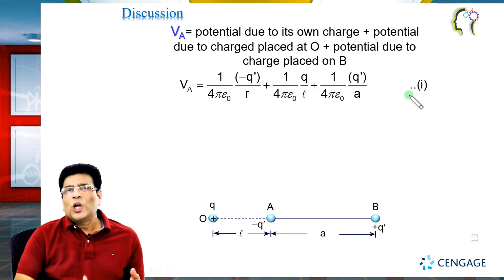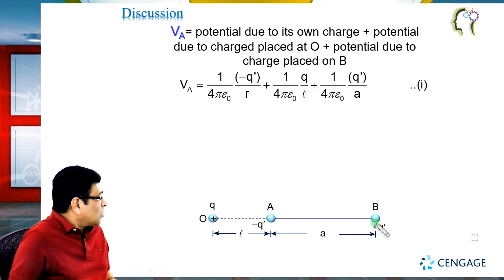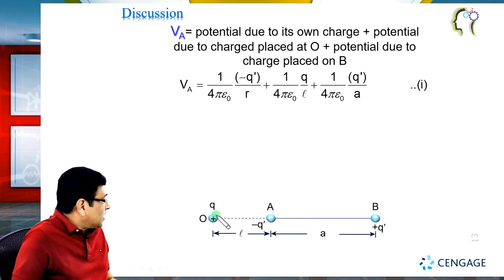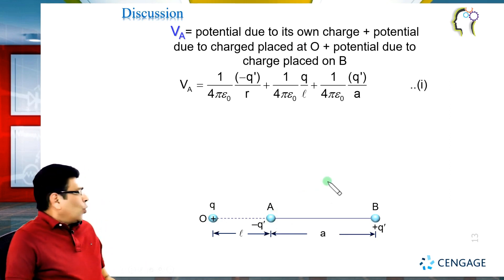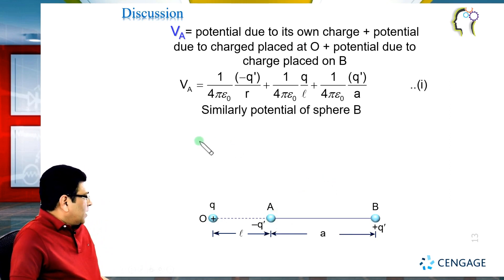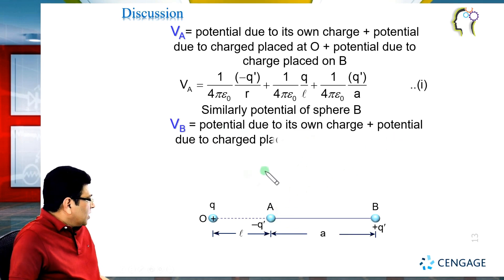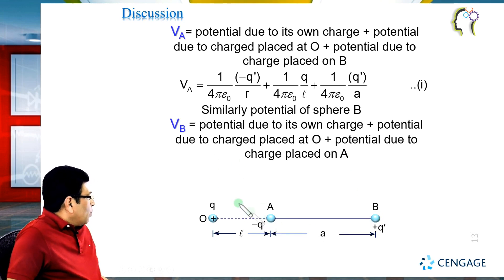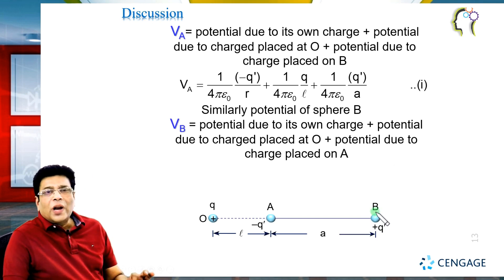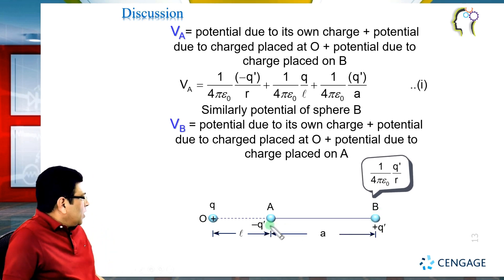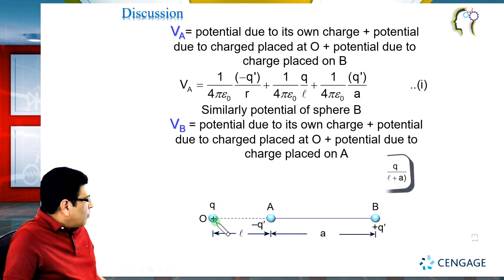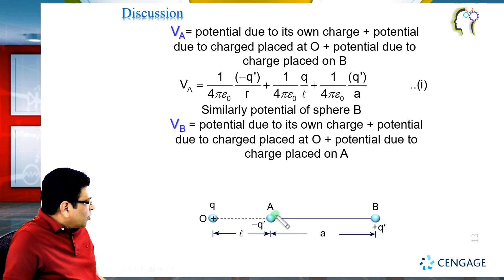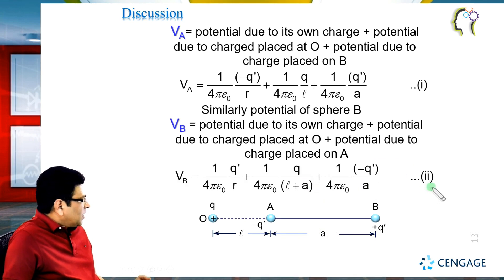Similarly, the potential of sphere B is: its own charge (1/4πε₀)(q'/r), plus potential due to q at distance (l + a) giving (1/4πε₀)(q/(l+a)), plus potential due to sphere A's charge −q' at distance a giving (1/4πε₀)(−q'/a). This is equation number 2.